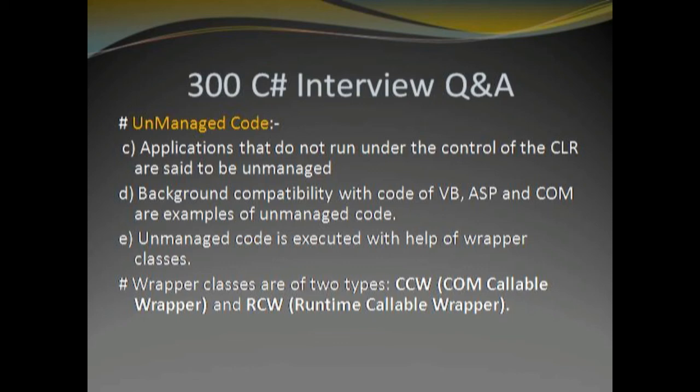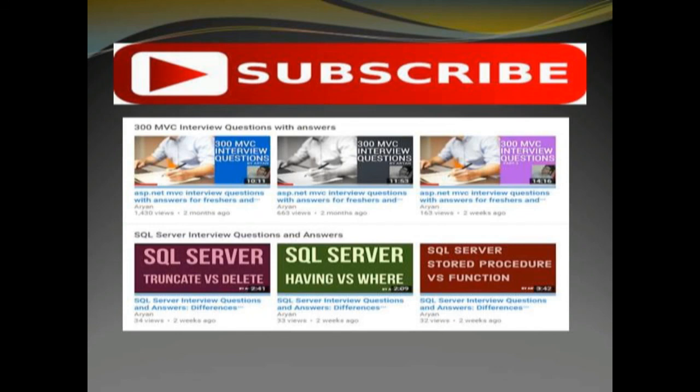Unmanaged code is executed with the help of wrapper classes. Wrapper classes are of two types: CCW and RCW. CCW means COM Callable Wrapper and RCW means Runtime Callable Wrapper. In this way, we have learned the key differences between managed and unmanaged code in C#.